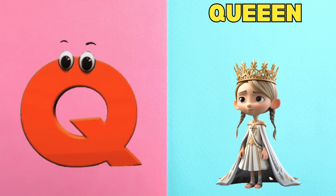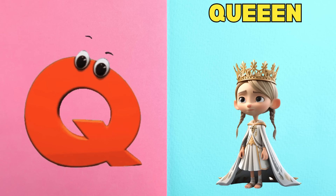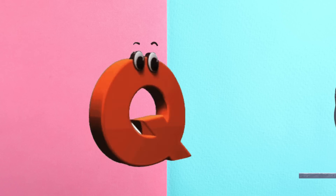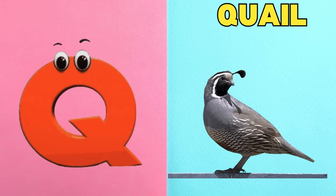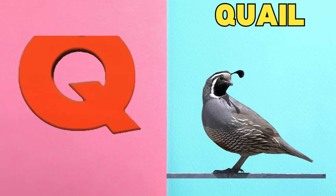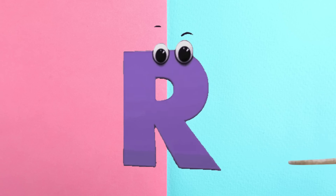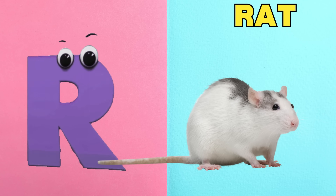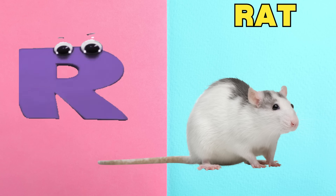Q is for Queen. Q, Q, Queen. Q is for Quail. Q, Q, Quail. R is for Rat. R, R, Rat.